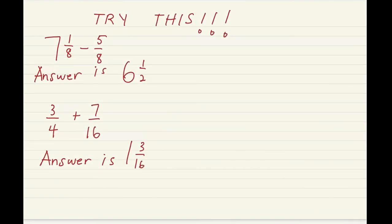Try these yourself: the first one is 7 whole 1 over 8 minus 5 over 8, and the answer should be 6 whole 1 over 2. The second one is 3 over 4 plus 7 over 16, and the answer is 1 whole 3 over 16. Try these yourself and let me know how you do.